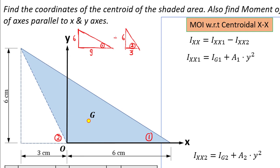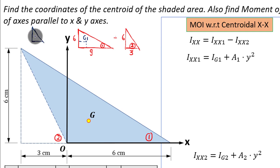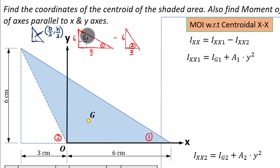One thing which is extremely important: the individual centroid g1 is going to be somewhere here. The centroid for any right angle triangle — the coordinates are b by three, comma h by three, where b represents the base, that is nine, and h represents the height, that is six. So g1 is going to have coordinates nine over three, that is three, and six over three, that is two.